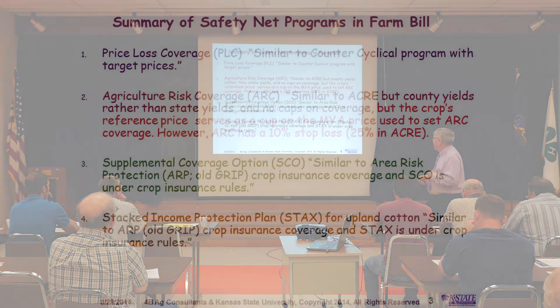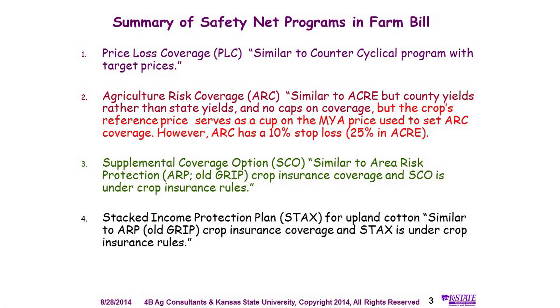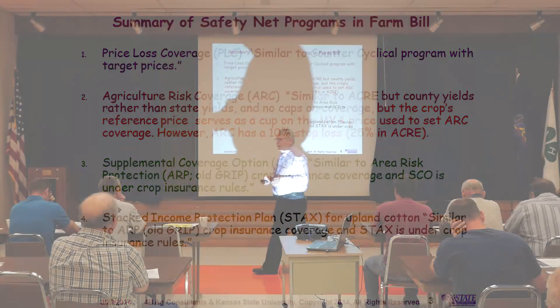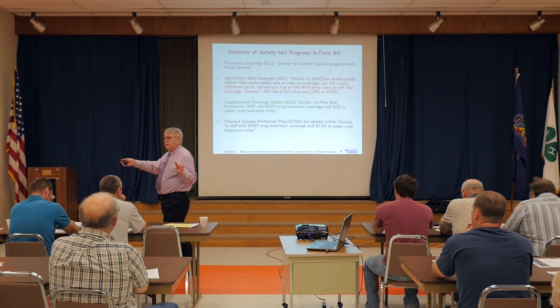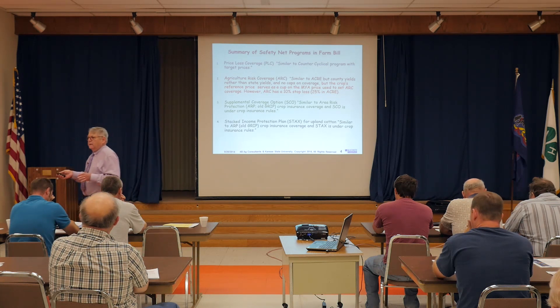STAX is a cotton program. STAX is also area coverage similar to GRIP, with the government paying 80% of the premium. It replaces the PLC program and the ARC program for cotton — there is no PLC or ARC for cotton. They can still buy regular crop insurance under STAX, but STAX is their safety net.